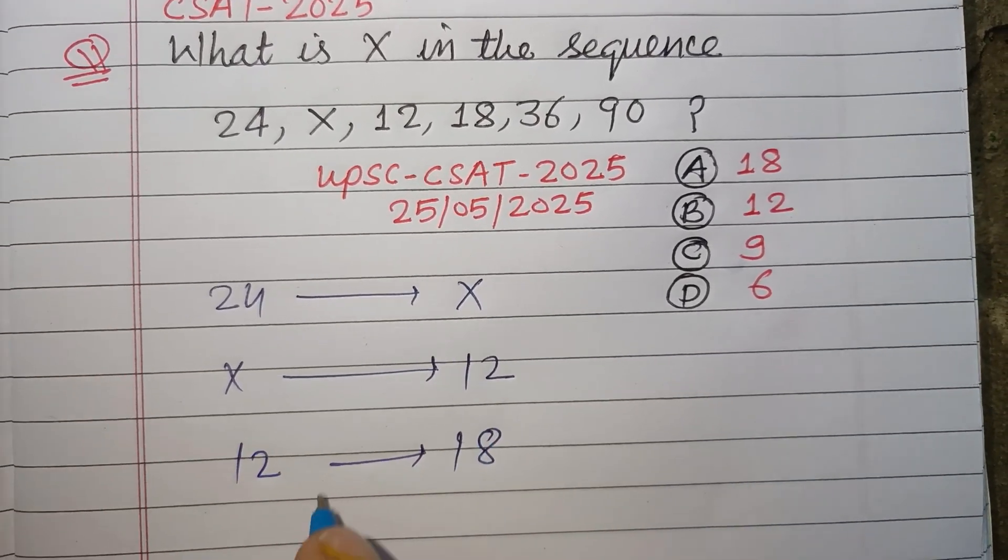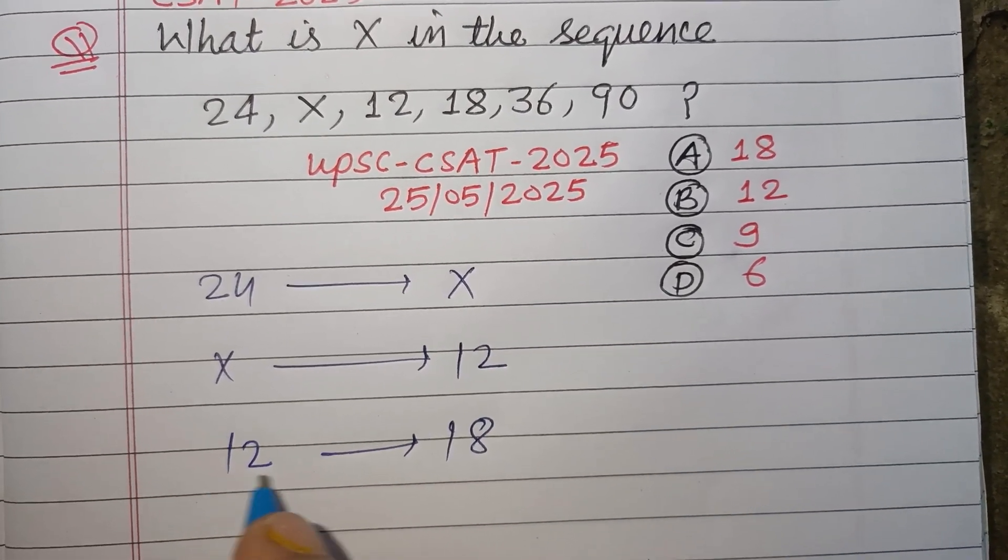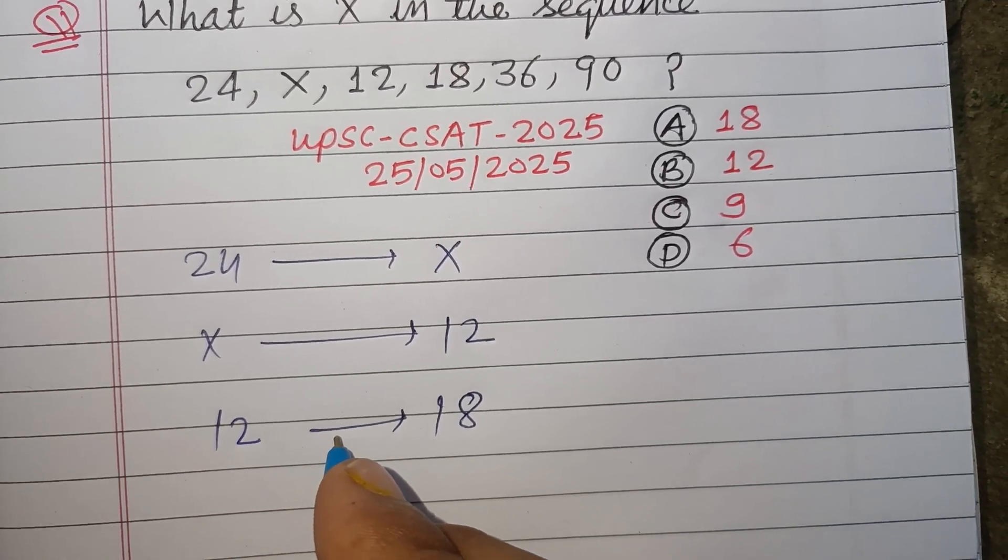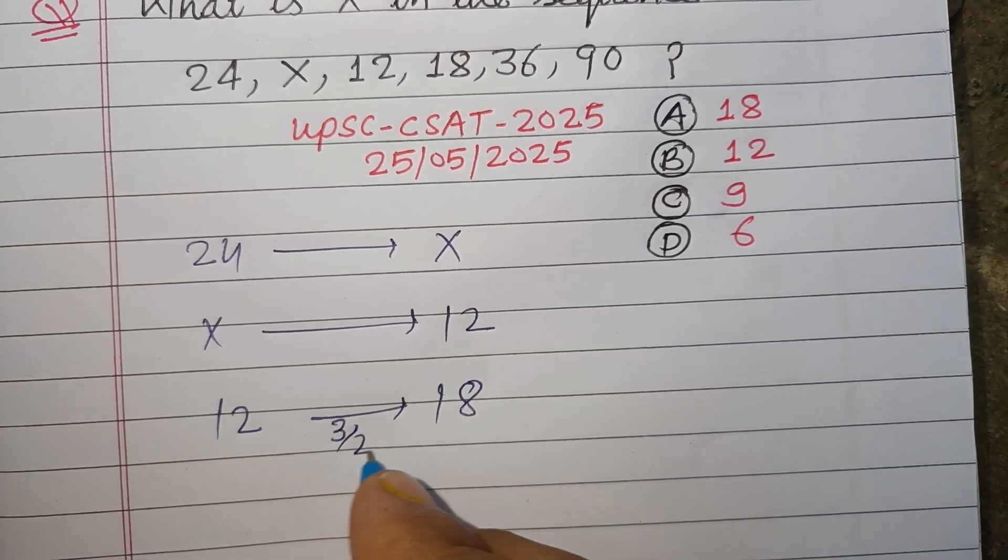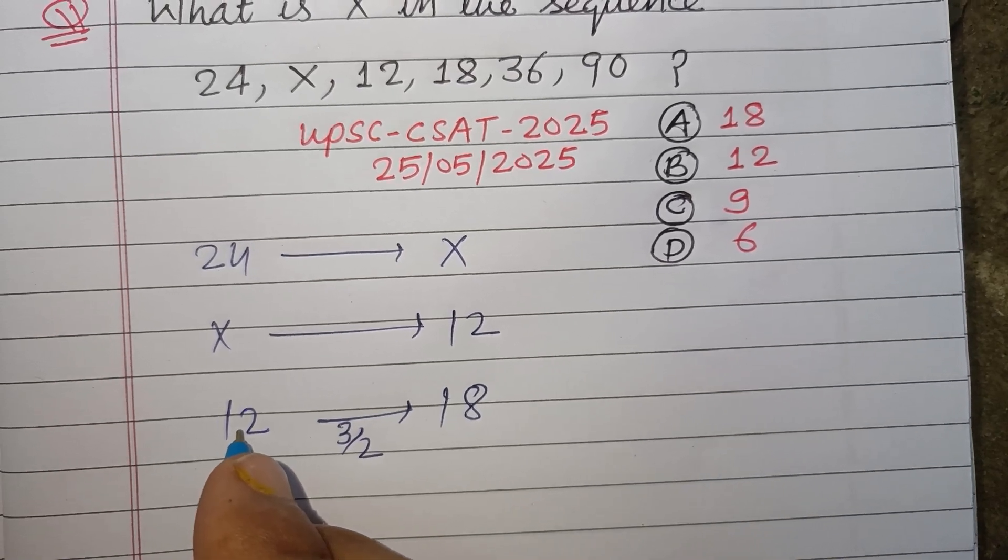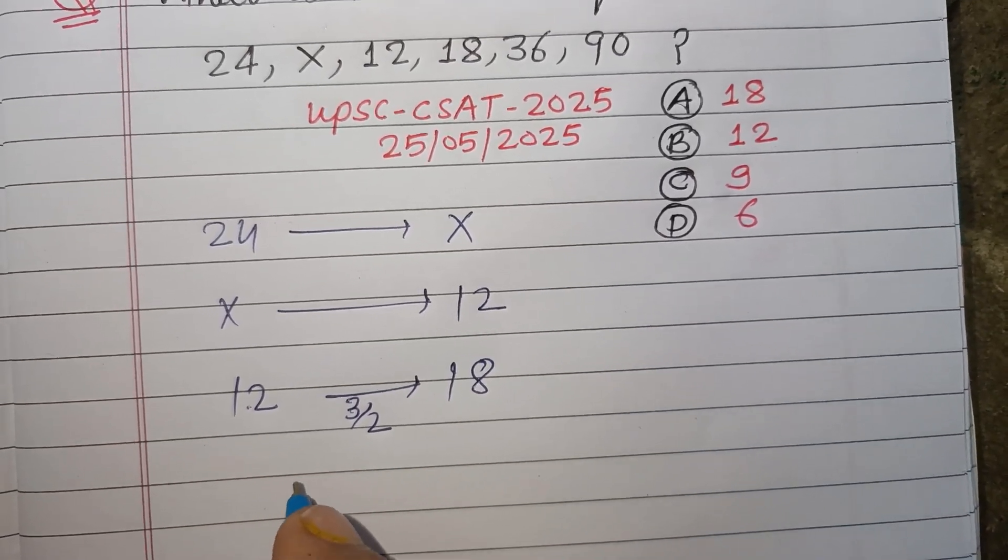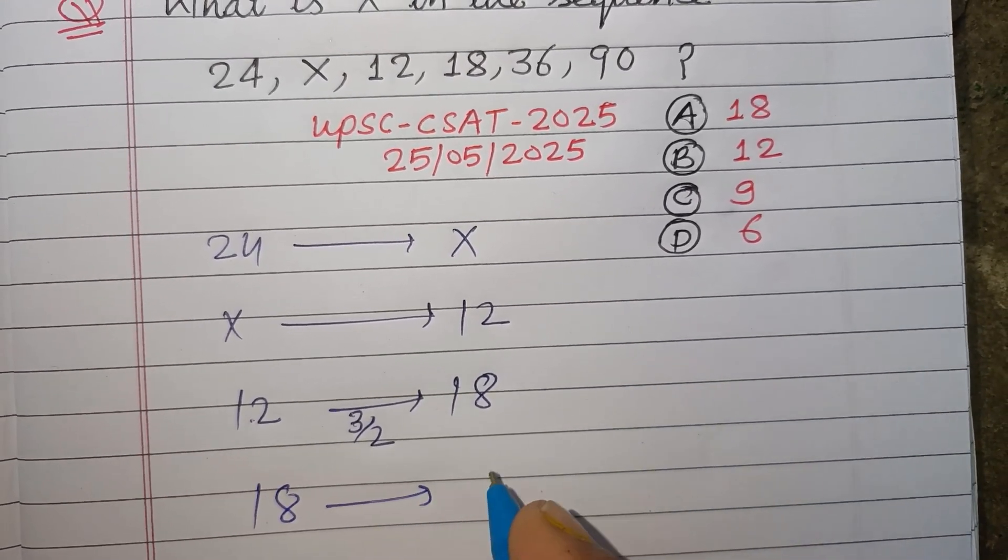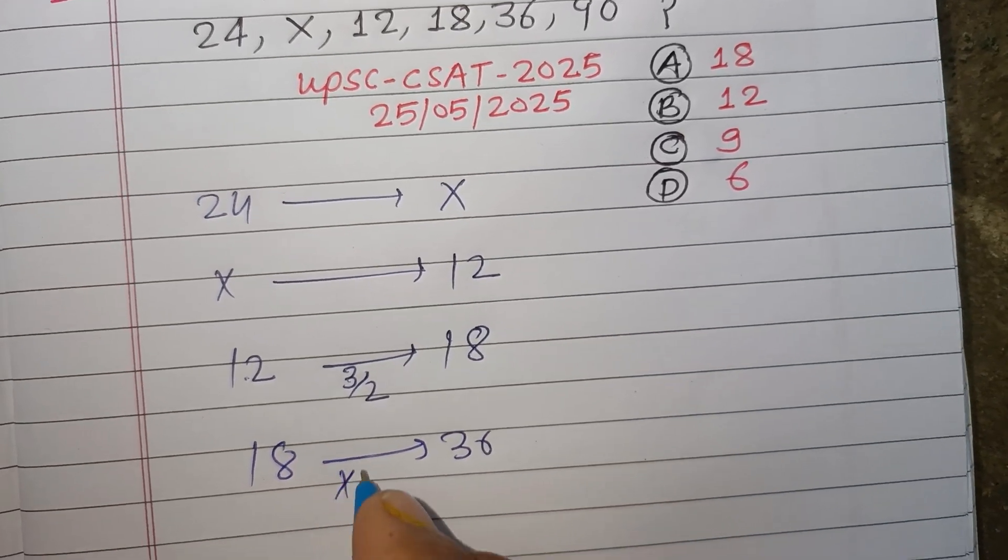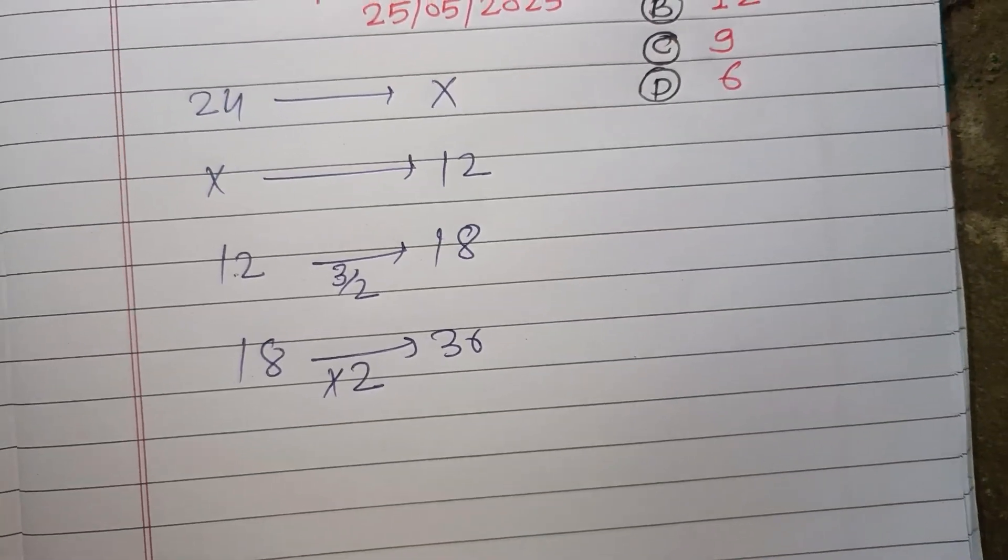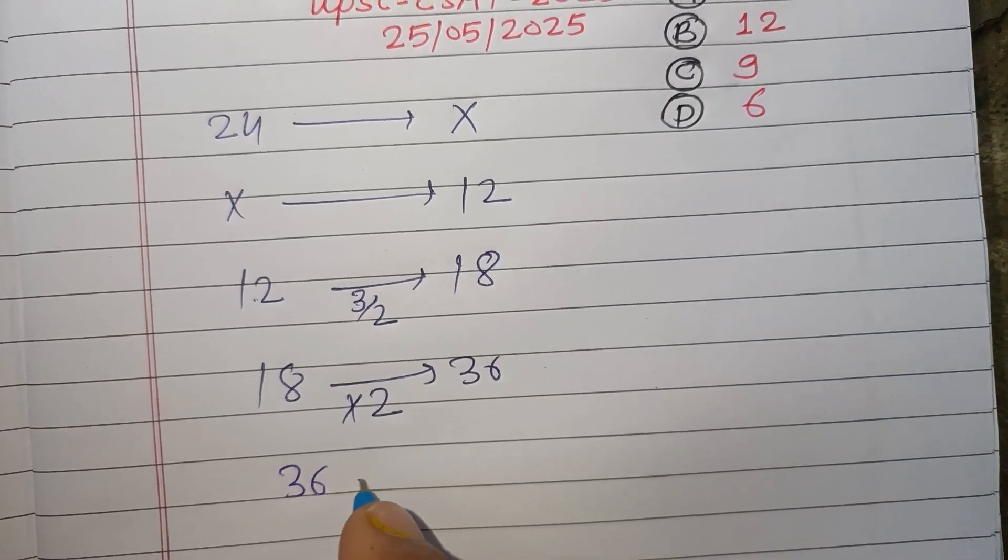12 changes to 18. It means when you multiply 12 by 3/2, you get 18. Now 18 becomes 36 when you multiply 18 by 2. You will get 36. And 36 changes